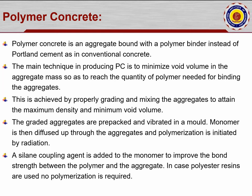The main aim of polymer concrete is to minimize the void volume so that binding is developed more. This is achieved by properly grading and mixing aggregates to attain maximum density and minimum void volume. The graded aggregates are then pre-packed and vibrated in a mold - similar to the table vibrator in the structural laboratory.